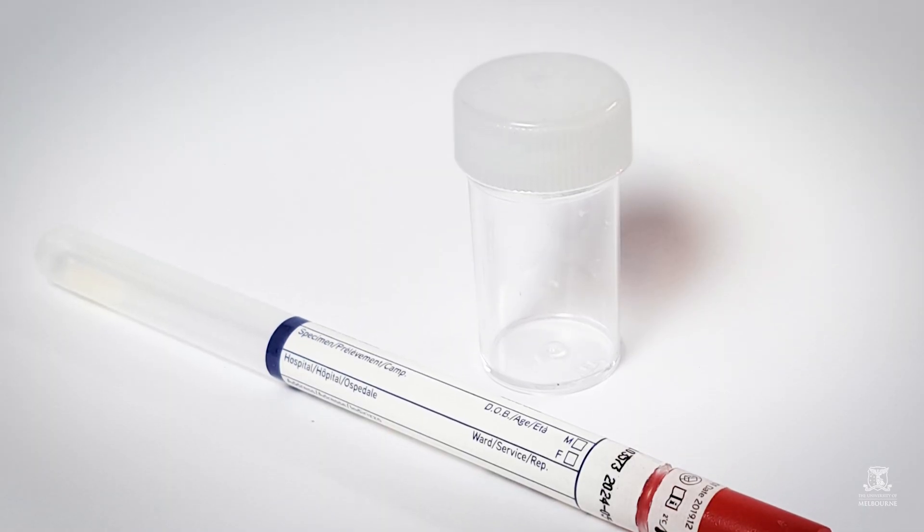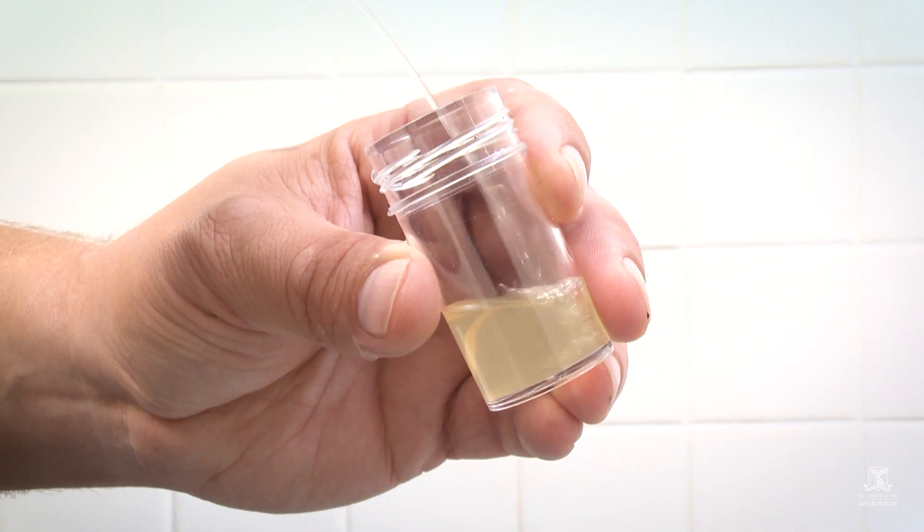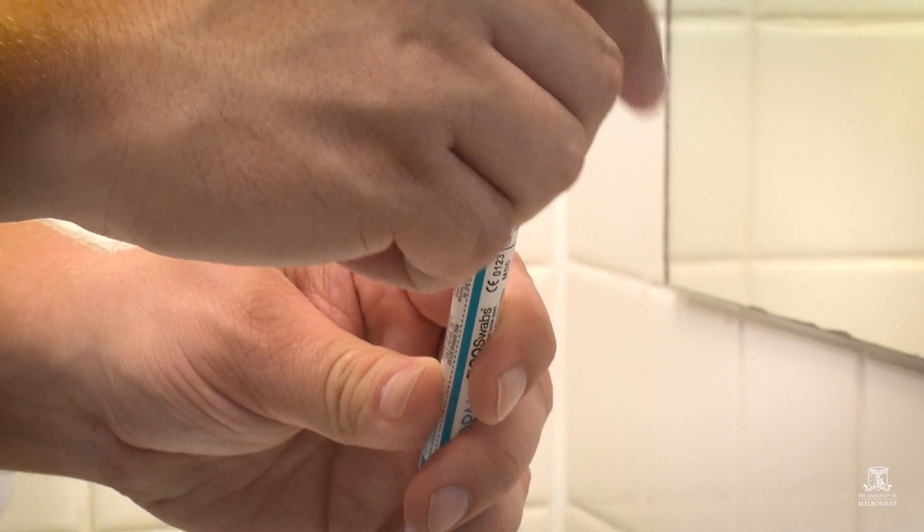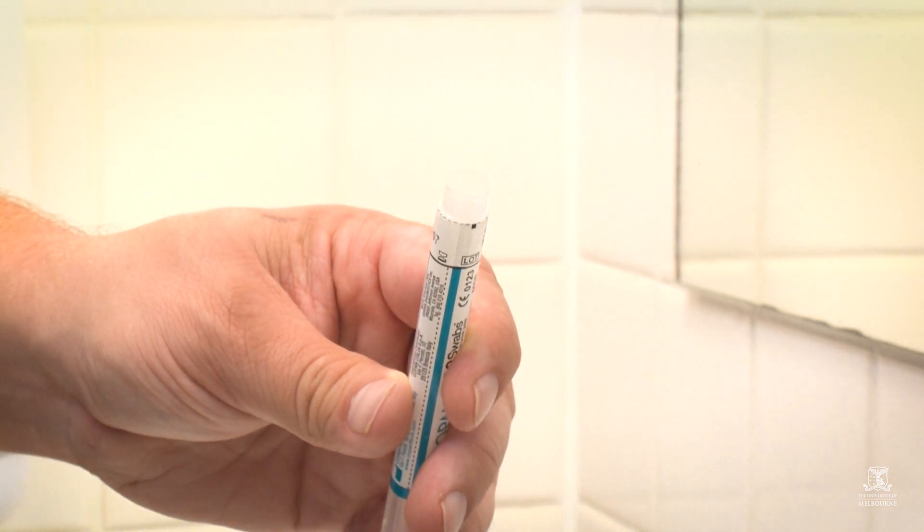Remove the white cap from the urine pot. Pass the first part of your urine into the urine pot, then finish peeing in the toilet. Twist and pull the red cap off the swab and remove it from the plastic tube.